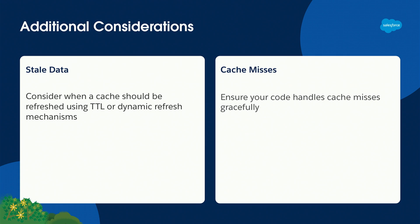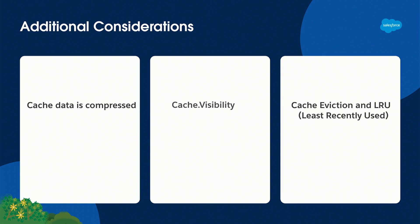Make sure your code handles cache misses — if the data isn't in the cache, have a fallback. Cache data is compressed, so it might take up less space than you'd expect. Cache visibility — if you're in a managed package, you can control whether that cache can be accessed by code outside your package. And be aware of cache eviction using a least recently used algorithm: if the cache is full and you go to put something new in, the least recently used item gets pushed out to make room.